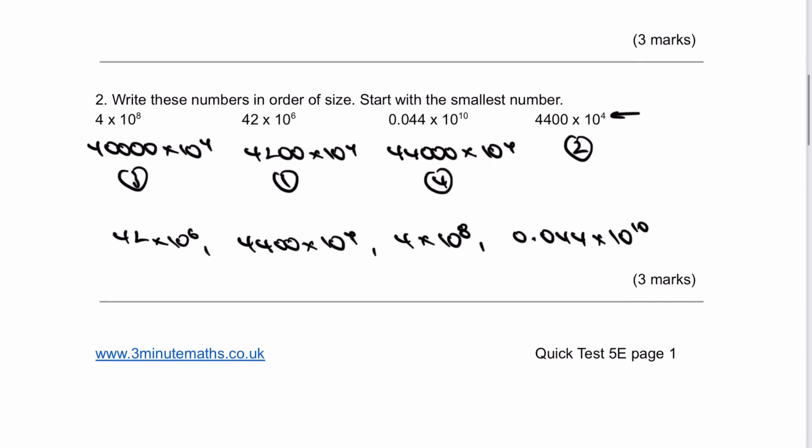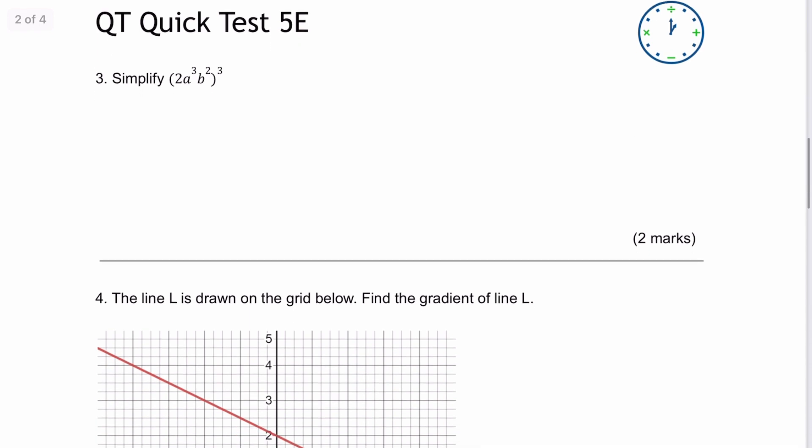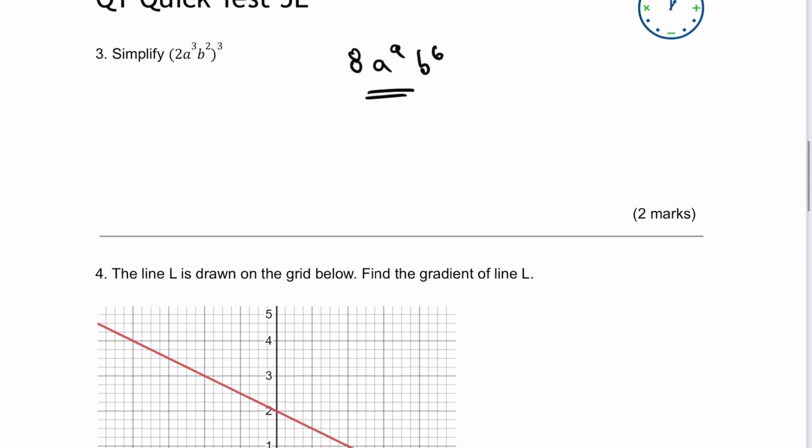Let's look at an index question, which is question number 3. With these, each of the terms inside the brackets I need to cube. Therefore, I've got 2 cubed, which is 8. Then I've got a to the 3 cubed, which is a to the power of 9. And then b squared cubed is b to the power of 6, because we multiply the indices. That's two marks on that question.